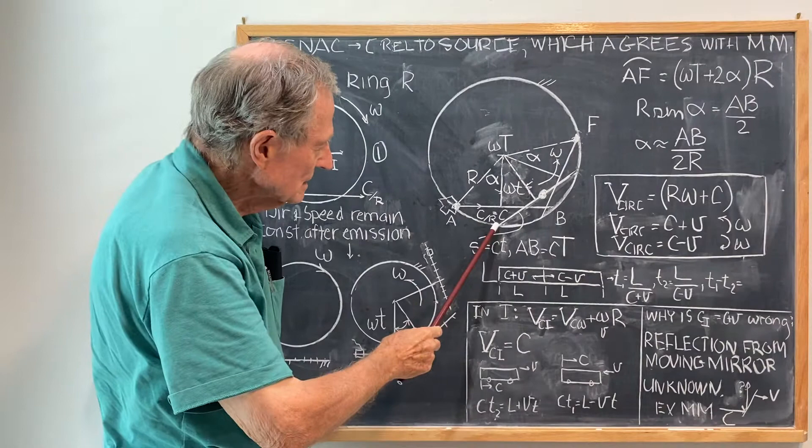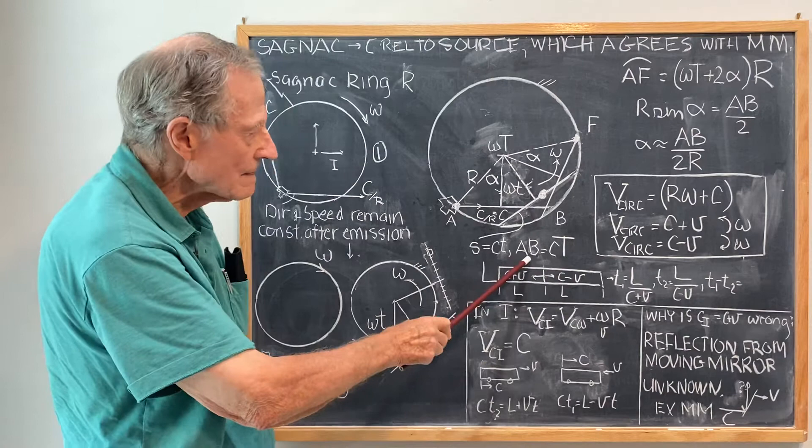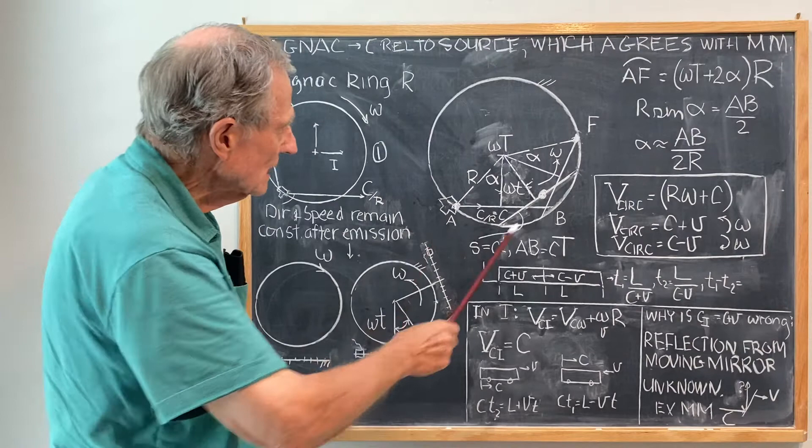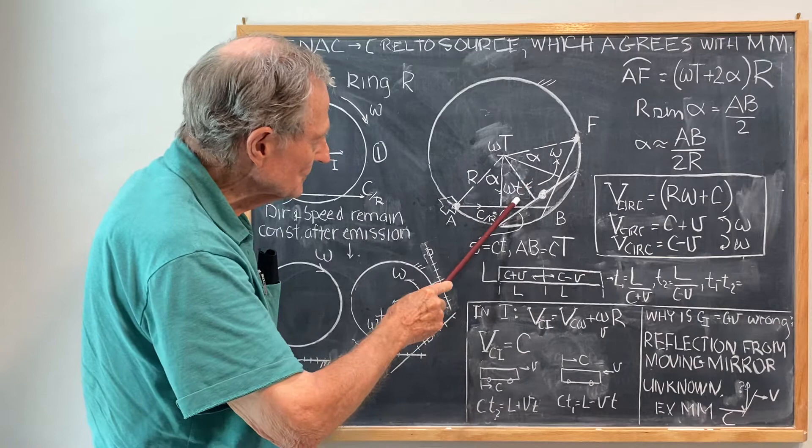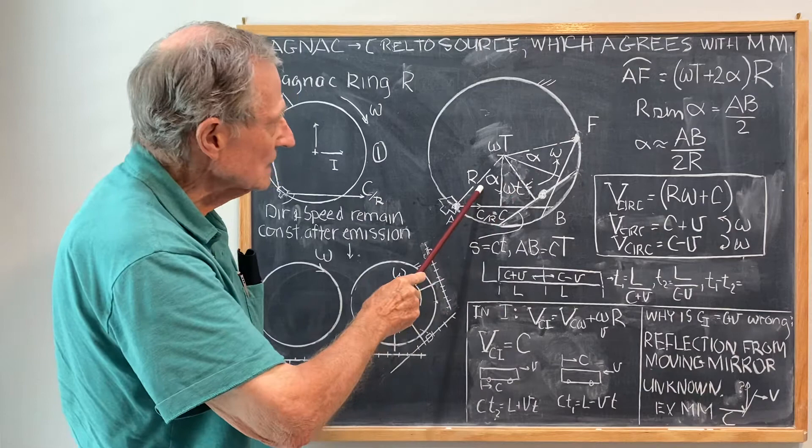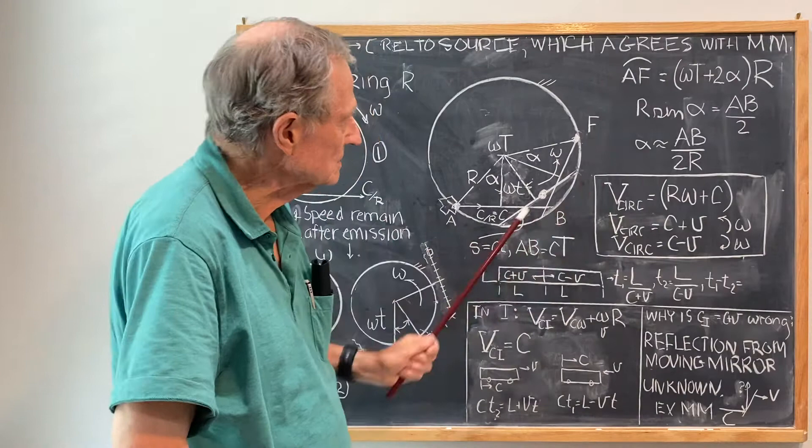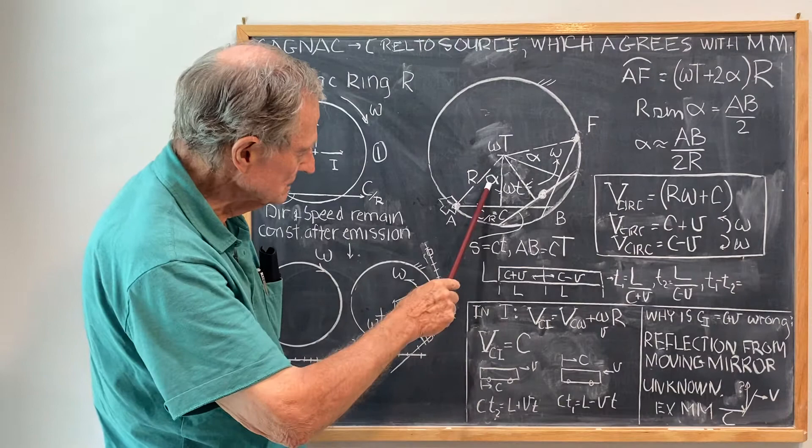Now, AB, this distance here, AB is equal to CT. And that tells you the time of traverse. And the distance of traverse is the arc AF. And that is equal to this angle here at time T equal cap T plus this angle plus that angle times the radius. Arc distance is angle times radius.